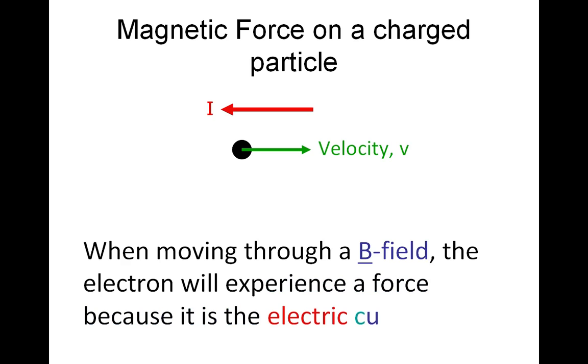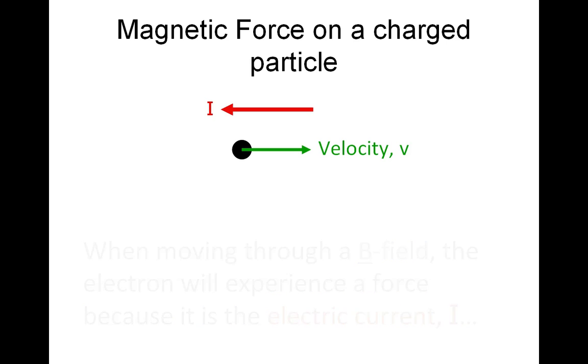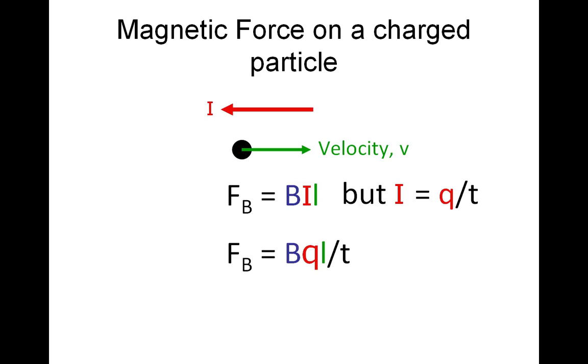As it moves through the B field, it's going to experience a force because the electron is the electric current. We have F equals BIL, but we know that I equals charge over time, so F equals BQL over T.